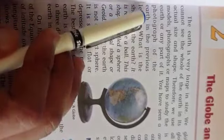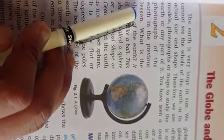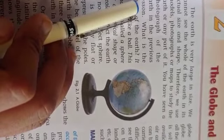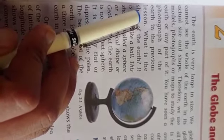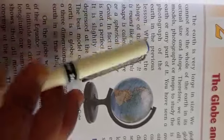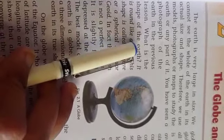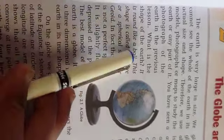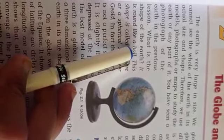You have seen a photograph of the earth in the previous lesson. The earth is a unique planet where life is possible. What is the shape of the earth? It is round like a ball but the actual shape is spherical.